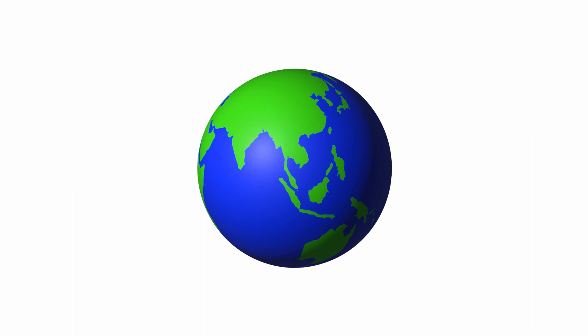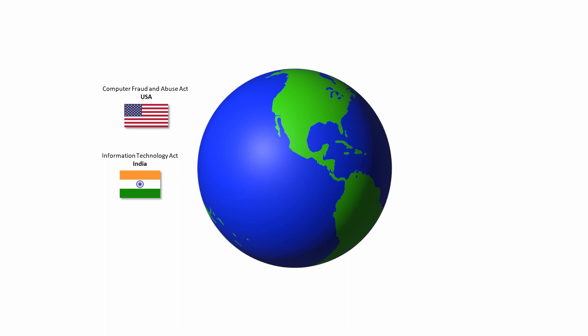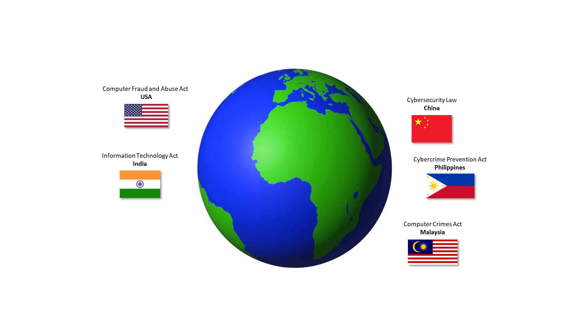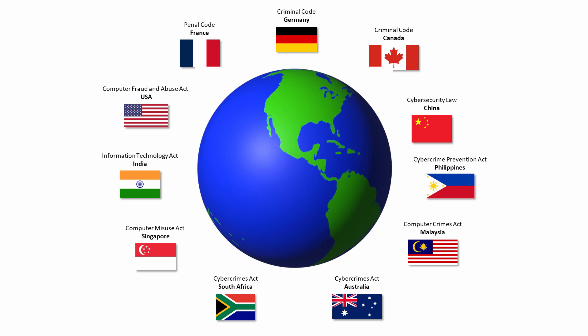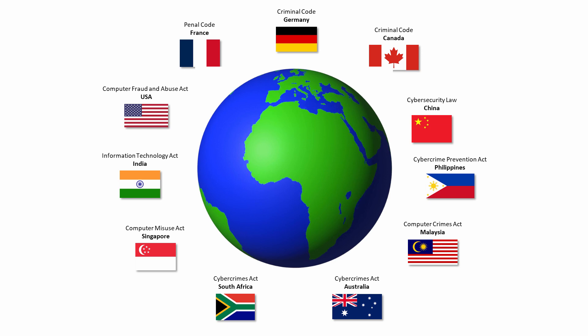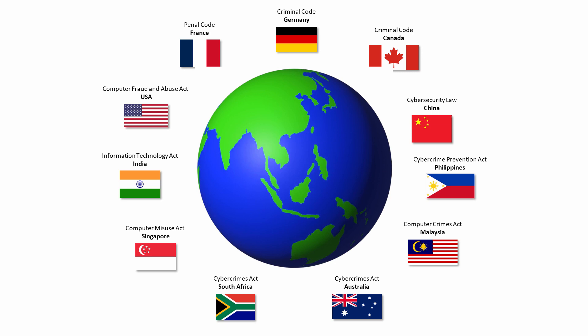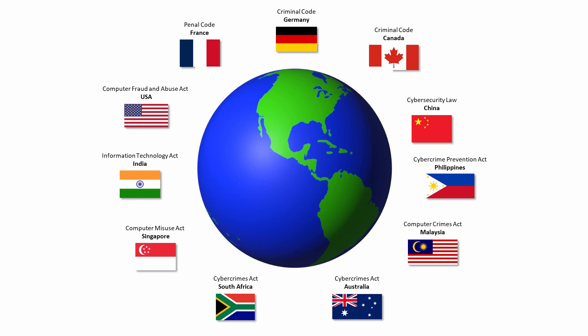Many countries have their own specific laws for cybercrime. The United States of America has the Computer Fraud and Abuse Act, India has the Information Technology Act, and the Philippines has the Cybercrime Prevention Act. Countries like Canada and Germany have wide-ranging criminal codes that include sections to cover cybercrime. But cybercrime is very much an international problem. The internet allows individuals and well-organised criminal gangs to operate on a global scale, and although lots of countries legislate for cybercrime, their different approaches can cause issues.